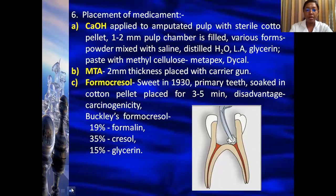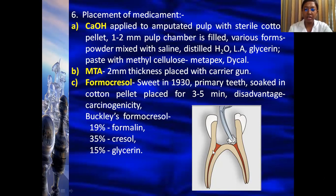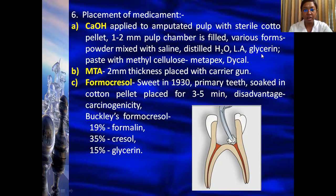Once the coronal pulp is completely removed and hemorrhage control is achieved, the next step is placement of the medicament approximately at the level of the cementoenamel junction — that is, exactly at the level of the canal orifice — without disturbing the vital pulp inside the radicular dentin. The medicament placed can be calcium hydroxide, MTA, or formocresol. Calcium hydroxide is applied to the stump at the level of the root canal with a sterile cotton, and 1–2 mm of the pulp chamber is filled with calcium hydroxide. It can be used directly from the tube or mixed as a powder with saline, distilled water, local anesthetic solution, or glycerin. The commonly used form is available as a paste — the trade name being Metapex or Dycal — available as a two-paste system (base paste and catalyst paste) mixed together to a uniform color.